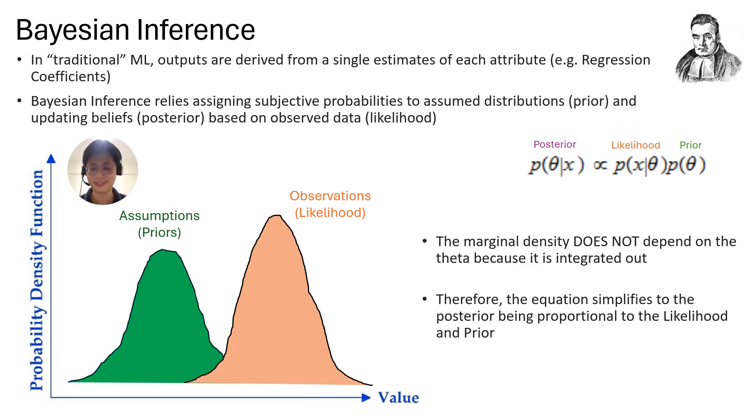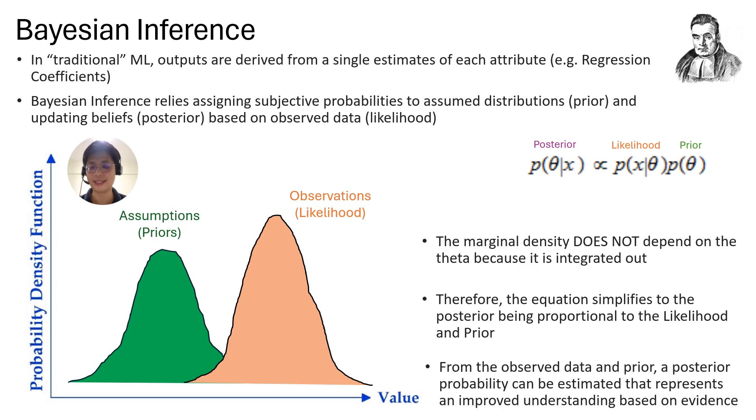It simplifies to just having the posterior depend on likelihood and prior in a proportionate manner. So you end up with an equation where you've got a posterior being proportional to the likelihood and the prior. That helps because now you've got the orange and the green, and you can derive the purple. The purple is the thing that allows you to make predictions against new data that you've never seen before because you've got an updated set of assumptions based on your earlier observations, which becomes kind of your training data. So that's how Bayesian inference works.